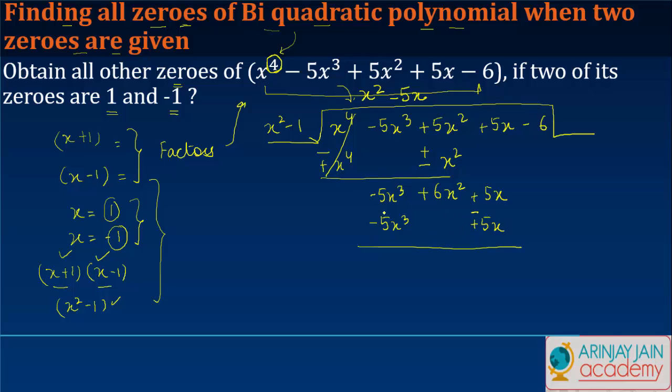This becomes minus, this becomes plus, knocked off. Plus 6x^2 - 6. If I multiply this by 6, I get 6 times x^2 is 6x^2, and 6 times -1 gives me -6.